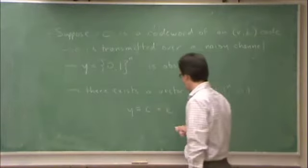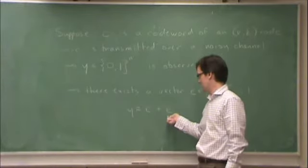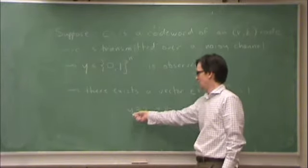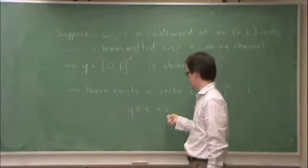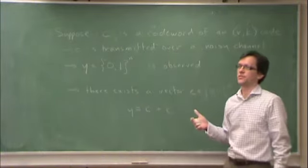What will be true of y wherever e is 0? What will be true of y wherever e is 0 is that y is equal to c. Wherever e is 1, y will be the opposite bit from c.